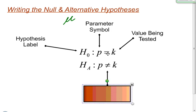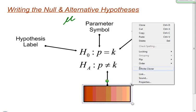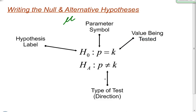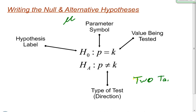Finally, the symbols in between give you the direction of the test — they tell you what type of test it is and what direction the test is going to take. For example, this one here would be a two-tailed test. Those are the different parts of your null and alternative hypotheses, and together they make up a hypothesis set.